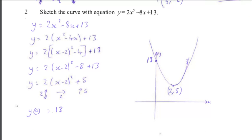So again, complete the square. Take out a common factor of 2 as it's 2x squared. Complete the square on x squared minus 4x. Multiply out the square bracket, tidy up these terms at the end.